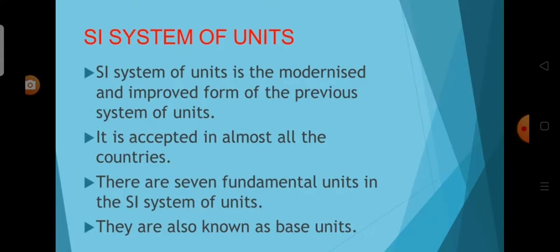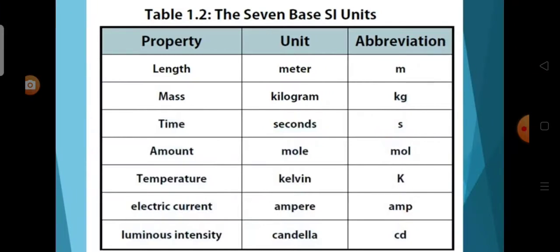Now we will see about the SI system of units. The SI system of units is the modernized and improved form of the previous system of units. It is accepted in almost all the countries. There are seven fundamental units in the SI system of units, also known as base units: length, mass, time, amount of substance, temperature, electric current, and luminous intensity.